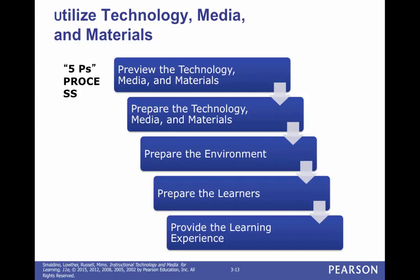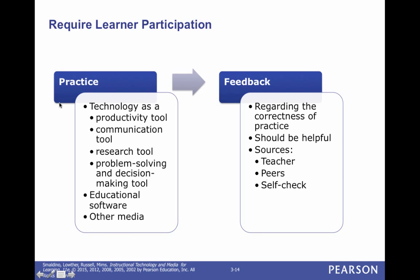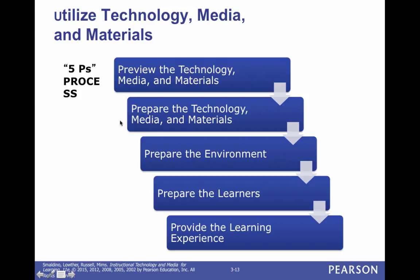In the textbook you'll see Utilize Technology, Media, and Materials, which involves the Five P's process. First, Preview the technology — when you pick materials for a lesson, review them first. Do not show students a video without reviewing it. Do not give students anything without doing it yourself first. Second, Prepare the technology — have it ready, have a link for them, have materials out on the table. Third, Prepare the environment — decide where students sit, set up the room. Fourth, Prepare the learners — tell them what they're going to learn and do. Fifth, Provide the learning experience.